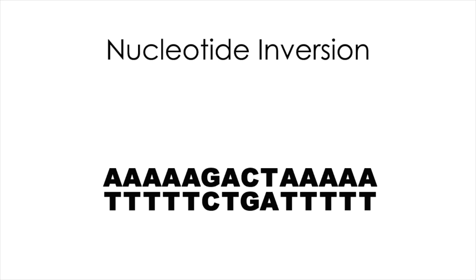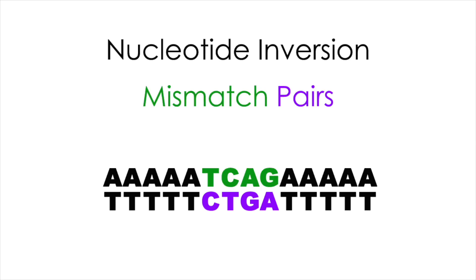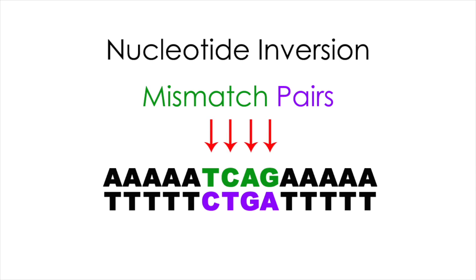A nucleotide inversion is where one or more nucleotides are removed from one strand of the DNA double helix, inverted, and then replaced into that DNA strand. This does not cause a frameshift because the same number of nucleotides that are removed will be replaced into that DNA strand. However, it will cause mismatched pairs in the location of the mutation.